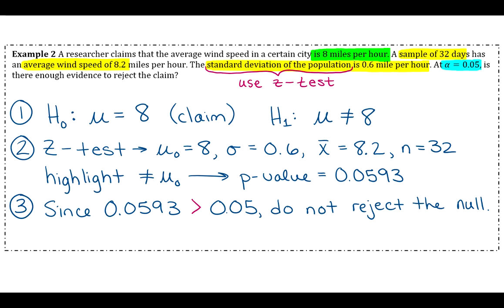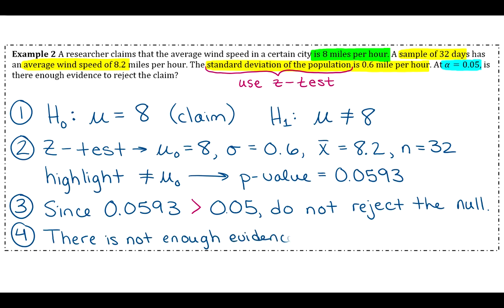Step four: make our summary statement. The claim is the null hypothesis and we're not rejecting the null hypothesis, so we say there is not enough evidence to reject the claim.